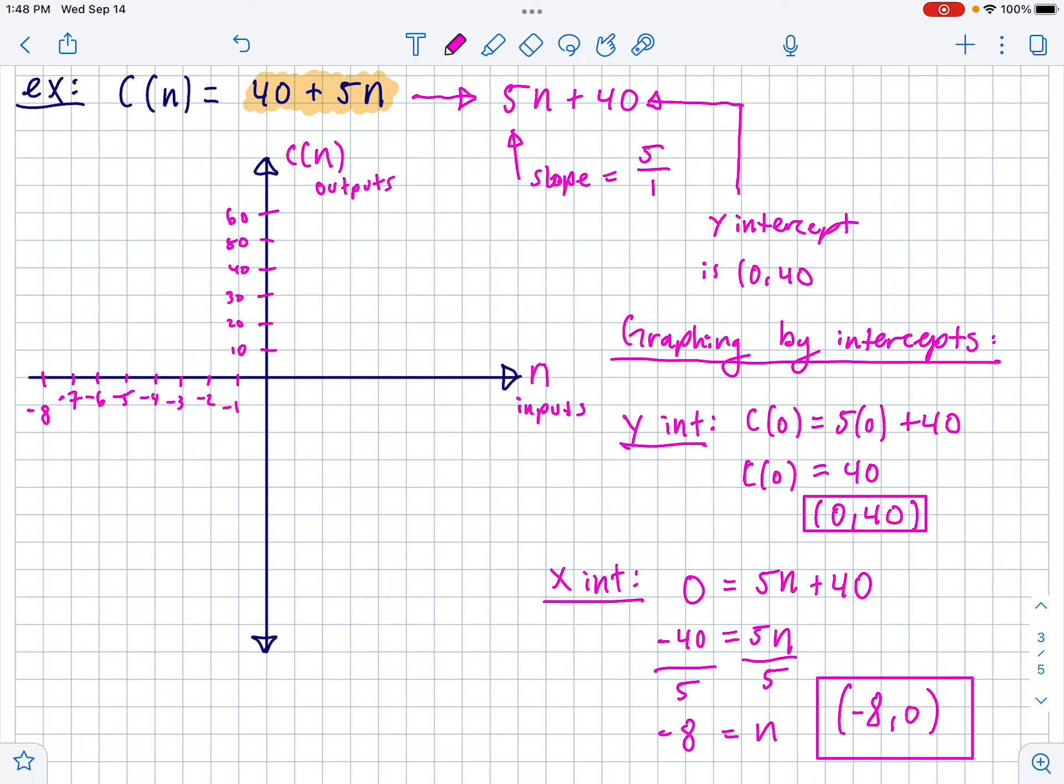So, now that I have, I can see where both those intercepts are, I'm going to put a big dot on 40 for my y-intercept, and I'm going to put a big dot on negative 8 for my x-intercept, and then I'm going to connect the dots. So, that's what it looks like. That's graphing by intercepts. I like graphing by intercepts because you don't have to rearrange the equation that much or think about the slope that much. You just purely find the intercepts and connect those two dots with a line, and then you're done.